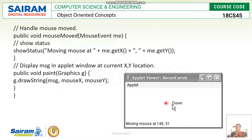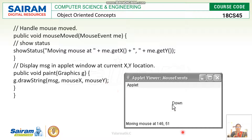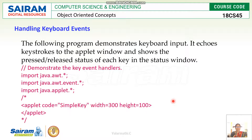In the paint method, whenever repaint is called, the corresponding message along with the x and y coordinates is drawn. This is the example program output — created with an applet of 300 width and 400 height. It shows the mouse moving at position 146, 51. When the mouse is pressed, it shows the 'down' message, and likewise for other events.